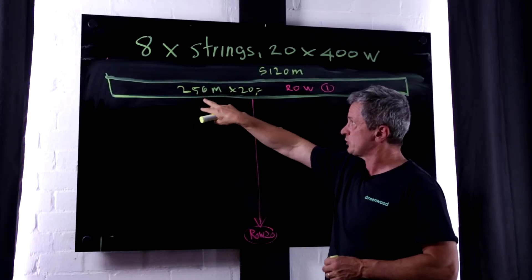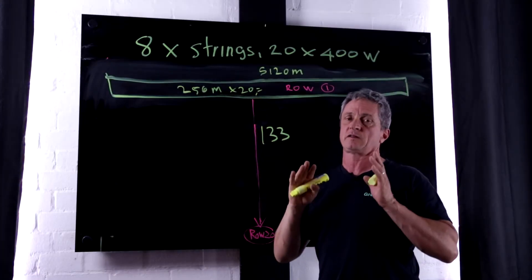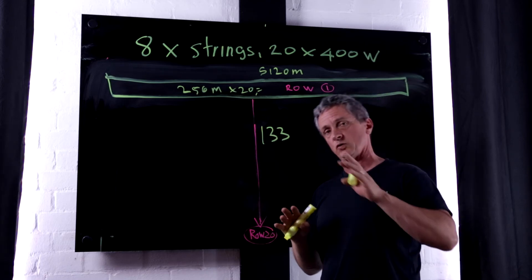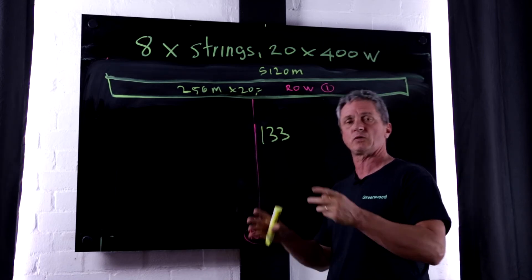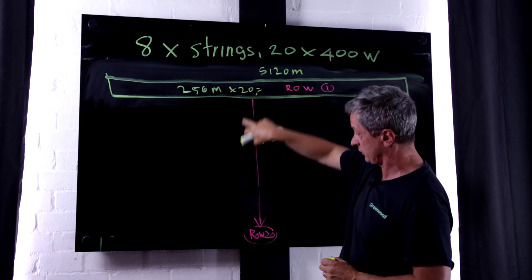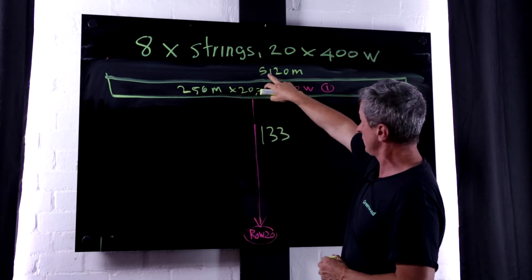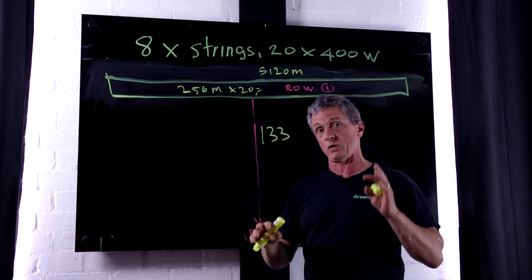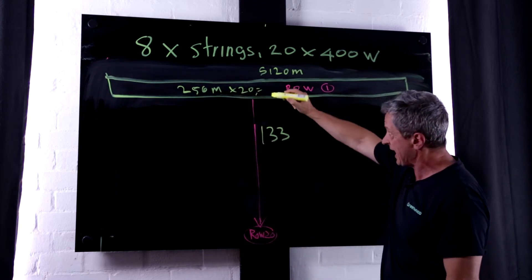So we've established that each row is using 256 metres of cable, and I'm not talking about the earth here, that's additional, we're talking about the poles and the negative. And obviously, we multiply that by the 20 rows, and we're using all up 5,120 metres of cable just within the rows.